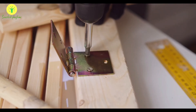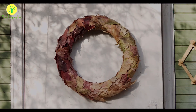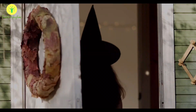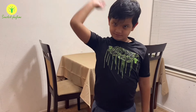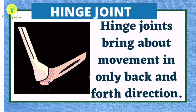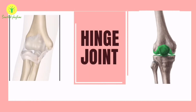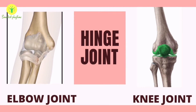You must have seen hinges on a door — they allow the door to move back and forth only. This type of movement can be observed in your elbow. Our elbow has a hinge joint which allows movement in the back and forth direction only. Examples of hinge joints are the elbow joint and knee joint.